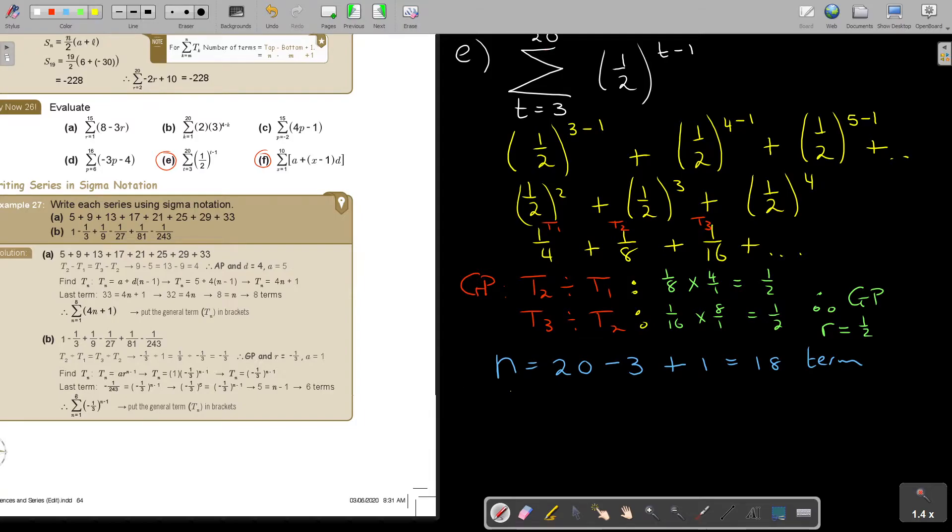So basically, I'm going to say, I'm using this formula, SN, and now R is smaller, so it's A, so it's 1 minus RN over 1 minus R. So, in the place of A, so in the place of A, what is A, A is my first term, I didn't write it, but the value of A was, where's the first, a quarter.